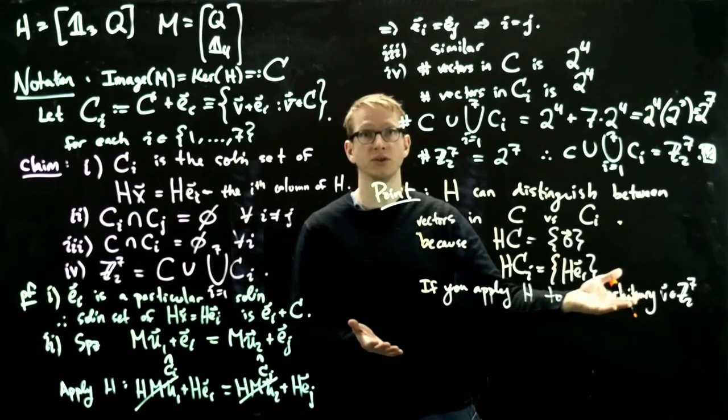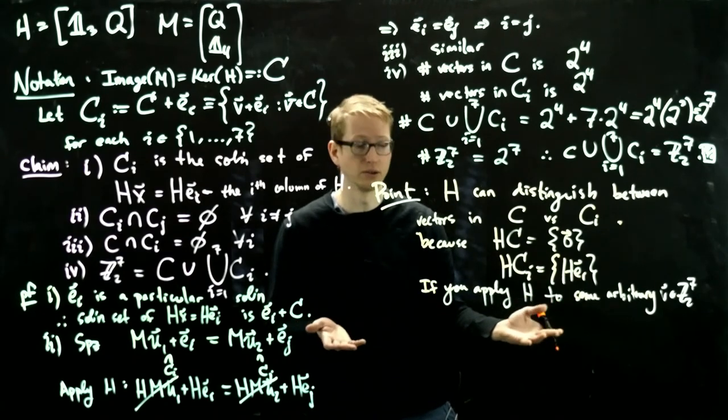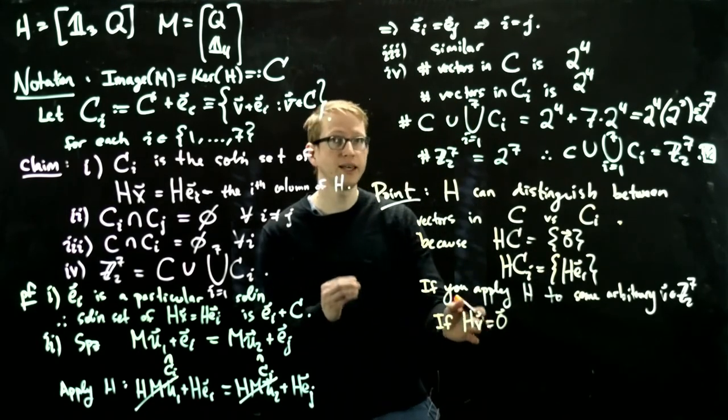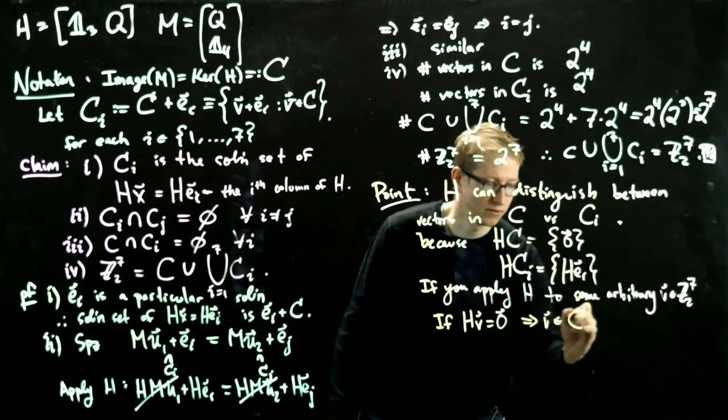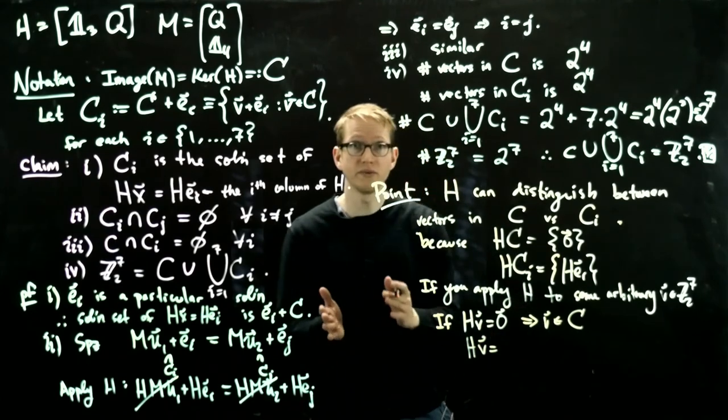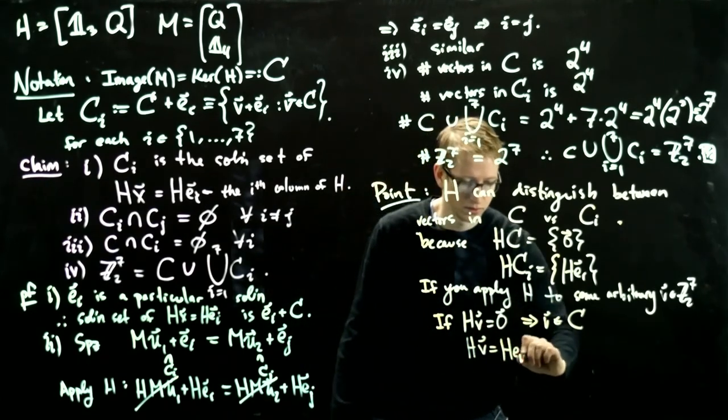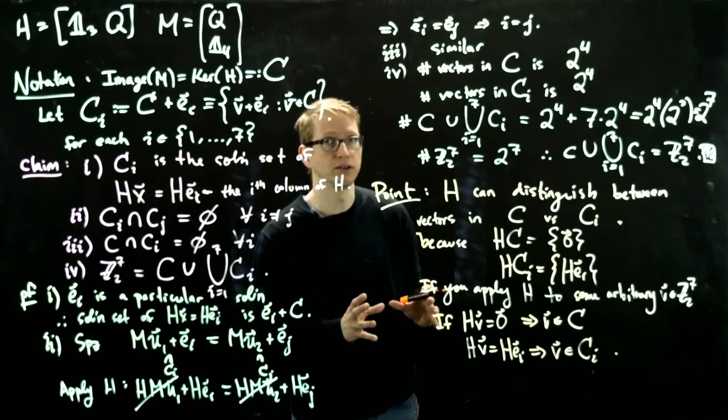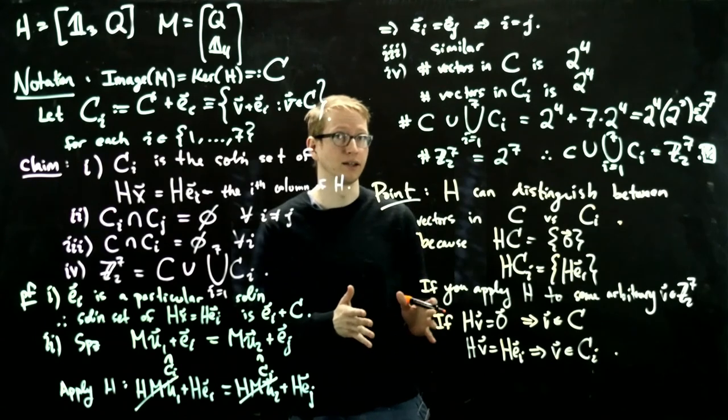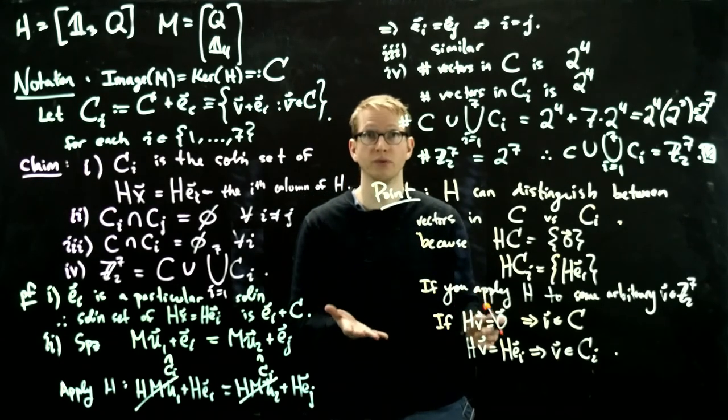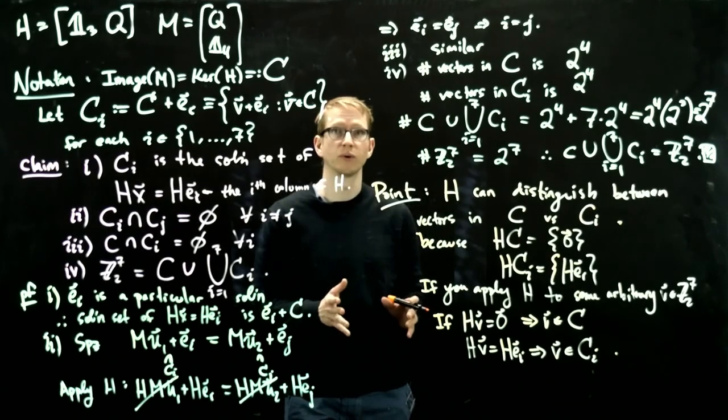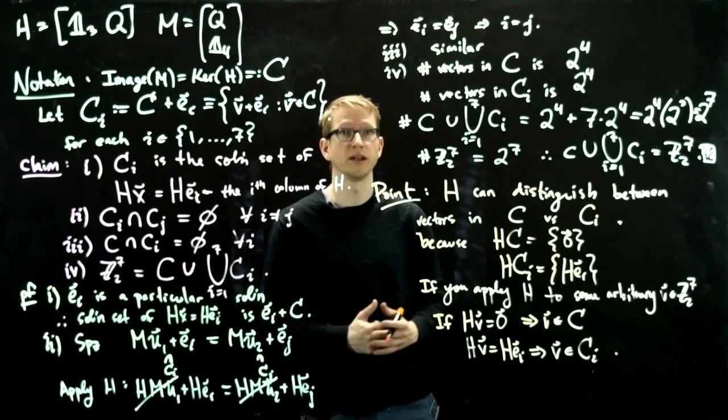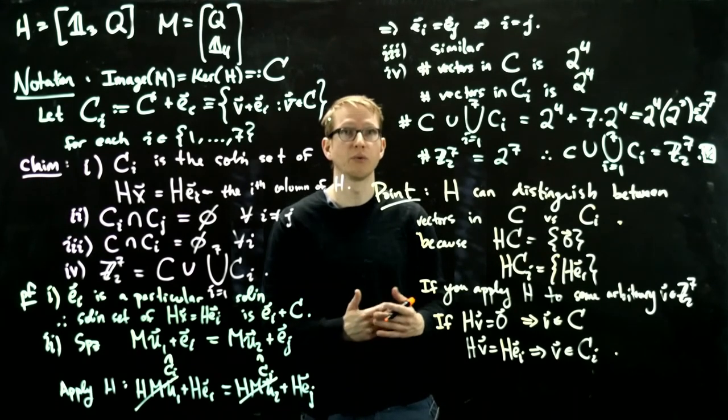And therefore, if you apply H to some arbitrary vector V in Z mod 2 to the 7th, it has to either be 0 or one of the columns of H. Because those are the only possibilities. H includes every nonzero vector. And therefore, if H of V is nonzero, it's one of the columns of H. And if it is 0, well then it's 0. And if H of V equals 0, this tells us that V has to be in C. But if HV equals one of the columns of H, then V must be in C_i. So it allows us to apply an operation to a specific vector. And it tells us which of these subsets that vector is sitting in. So now the question is, what can we use this for? And that's going to be the purpose of the next video where we'll talk about error correction codes. And how this method can be used to isolate where an error occurs in a message, and how to fix that error and obtain the original message that was sent.